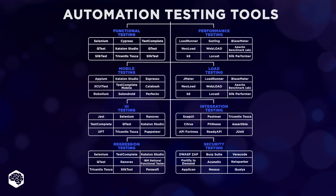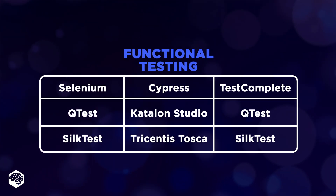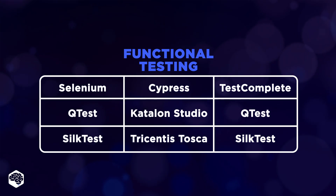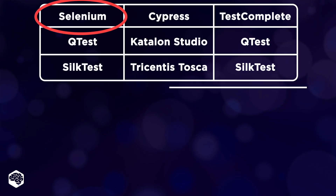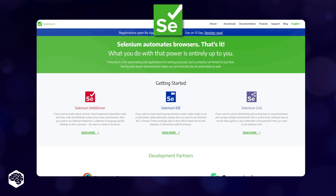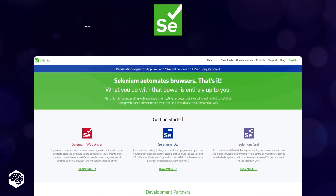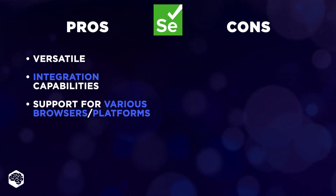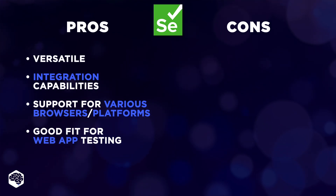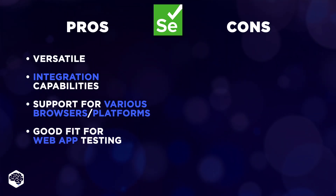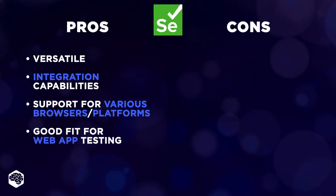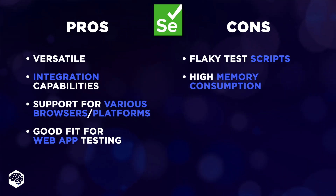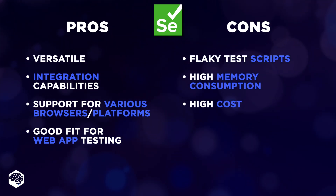Let's start with the very foundation: functional testing. Out of the many functional testing solutions, Jelvix experts ensure that developed solutions function according to requirements with the help of Selenium. Selenium is incredibly versatile with strong integration capabilities and is widely supported across different browsers and platforms — it's a favorite among Jelvix developers for web application testing. However, it can be challenging due to flaky test scripts with dynamic web elements, high memory consumption during test runs, and relatively expensive licensing.